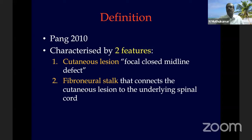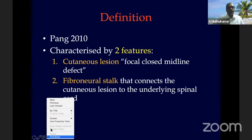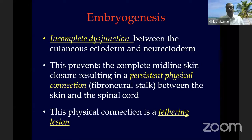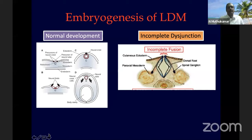LDM is characterized by two features: a cutaneous lesion and a physical connection between the cutaneous lesion and the underlying spinal cord. The embryogenesis is similar to spinal dermal sinus — there is an incomplete disjunction between the cutaneous ectoderm and neuroectoderm, resulting in a persistent physical connection forming the tethering element. This incomplete disjunction can result in two types of LDMs.